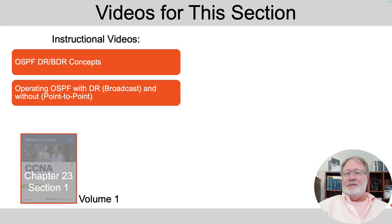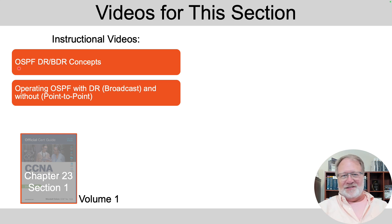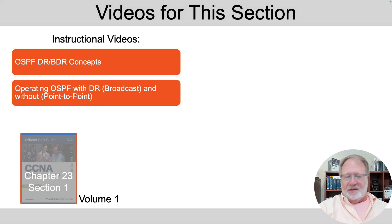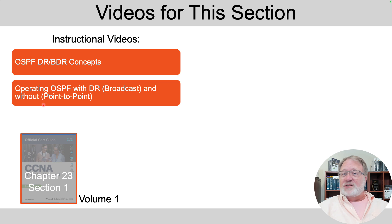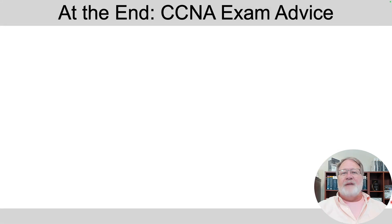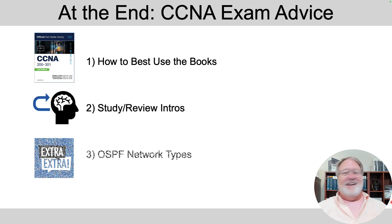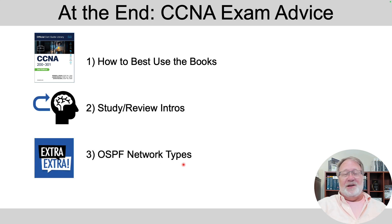This video is one of two videos based on the scope of content in the CCNA CertGuide Volume 1, Chapter 23, Section 1. In this video, we'll talk about the theory and concepts about the designated router and backup designated router, but not get into the command line interface. In the second video, we'll cover the CLI for configuring and verifying things using a designated router with the broadcast network type, and when not using a designated router with the point-to-point OSPF network type.